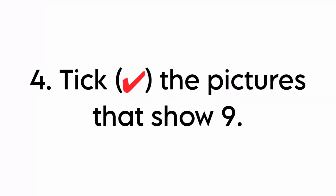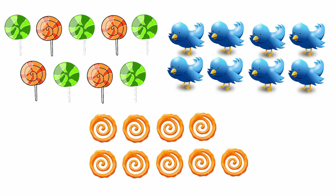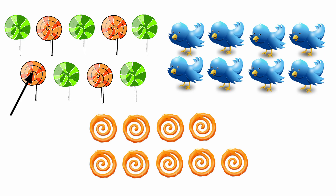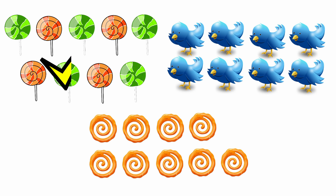Look at the fourth one. Take the pictures that show 9. Look at the first one. Here there are 1, 2, 3, 4, 5, 6, 7, 8, 9. There are 9 lollipops. So we are going to take the picture of lollipops.